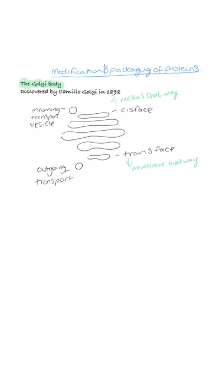The space in between the membranes are known as the lumen. Each of the flattened sacs are known as cisternae.